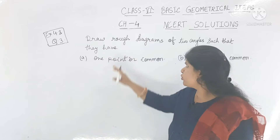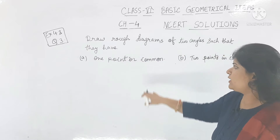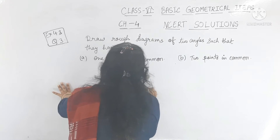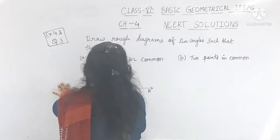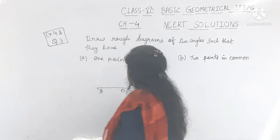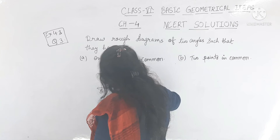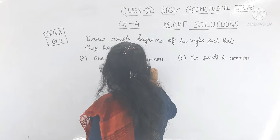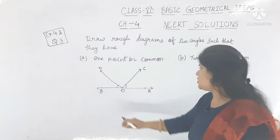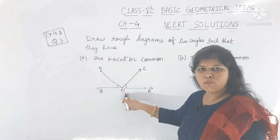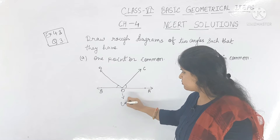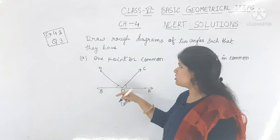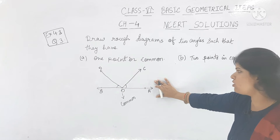Let's see question number 3. You have to draw rough diagrams of two angles such that they have one point in common. The common point is O — O is the common point of angle BOD and angle AOC.